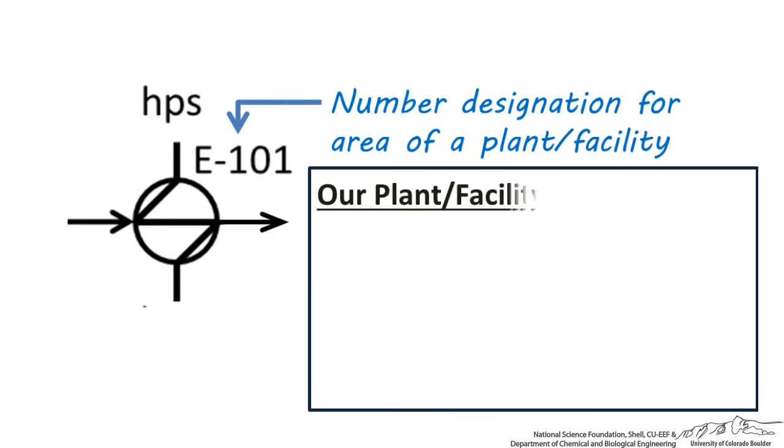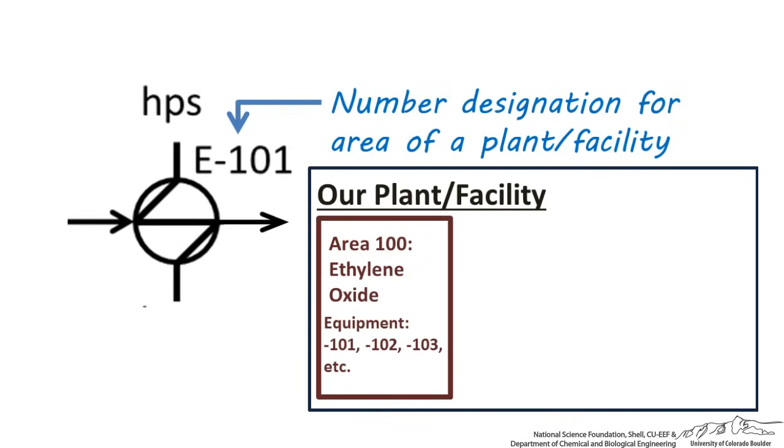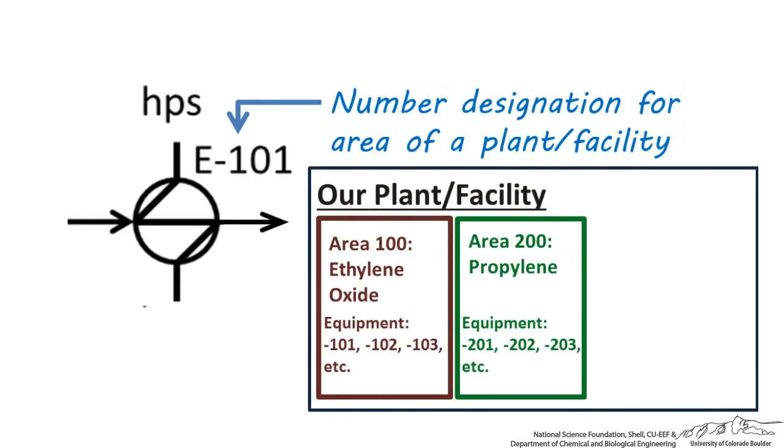Let's take a look at an example of a plant or facility. If in area 100 in our plant we make ethylene oxide, then all pieces of equipment in that area used in making ethylene oxide should be numbered 101, 102, 103, etc. If in area 200 in our facility we make propylene, then all equipment in that area associated with the propylene process should be numbered 201, 202, 203, etc.